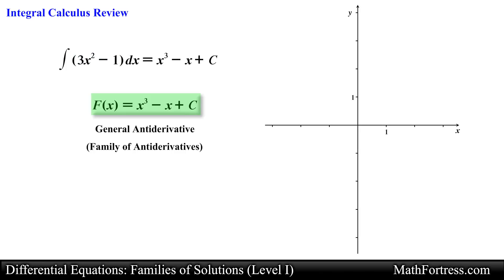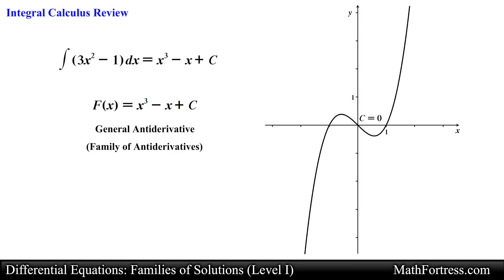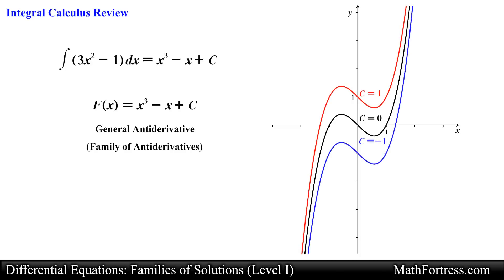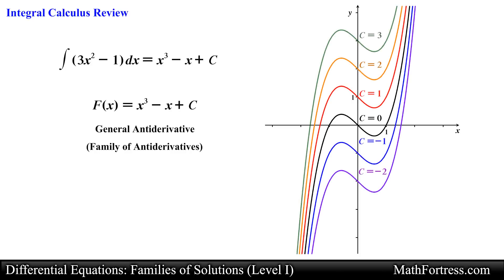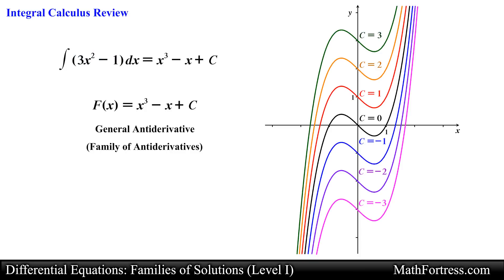If we were to graph the antiderivative with constant of integration equal to 0, we would obtain the following curve. In the same manner, if we let the constant of integration equal 1, negative 1, 2, negative 2, 3, and negative 3, we would obtain the following curves. All of these curves represent the various antiderivatives of the function 3x squared minus 1. If you were to take the derivative of any of these curves, you would obtain the function 3x squared minus 1. As a result, these curves are all part of one family represented by the general antiderivative x cubed minus x plus c.